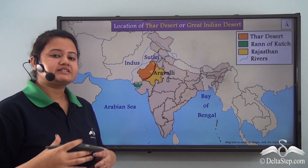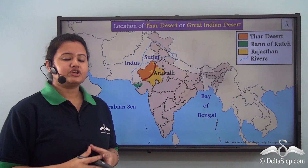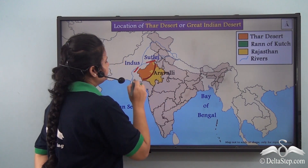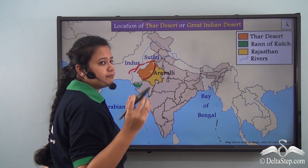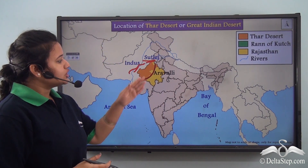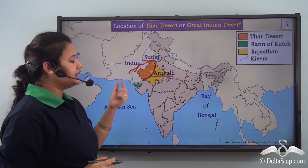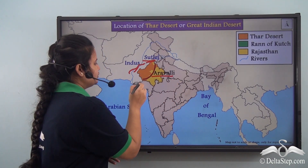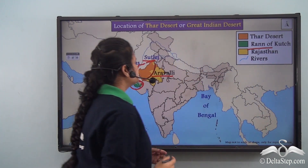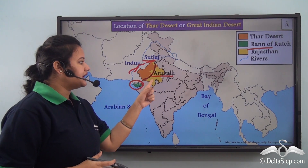Thar Desert is encircled by several physiographic features. It is bounded on the west and northwest by the River Indus and its important tributary, the Sutlej. It is also bounded to the east by the Aravalli range, and to the south of Thar Desert lies a region of salty marshes known as the Rann of Kutch. These are the important boundaries of Thar Desert.